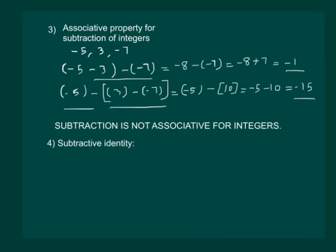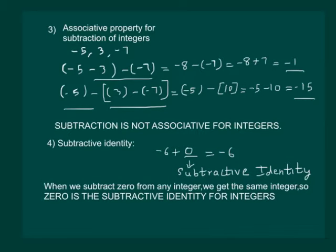Our next property is to find a subtractive identity. We know that for any integer, say minus 6, we can subtract 0 to get the same integer. So we can say that 0 is the subtractive identity. Hence we state that when we subtract 0 from any integer, we get the same integer. So 0 is the subtractive identity for integers. In general, for any integer a, a minus 0 is a.